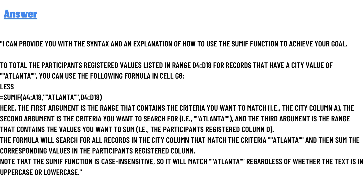The second argument is the criteria you want to search for, i.e., Atlanta. The third argument is the range that contains the values you want to sum, i.e., the participant registrations column D. The formula will search for all records in the city column that match the criteria Atlanta and sum the corresponding values in the participant registrations column.